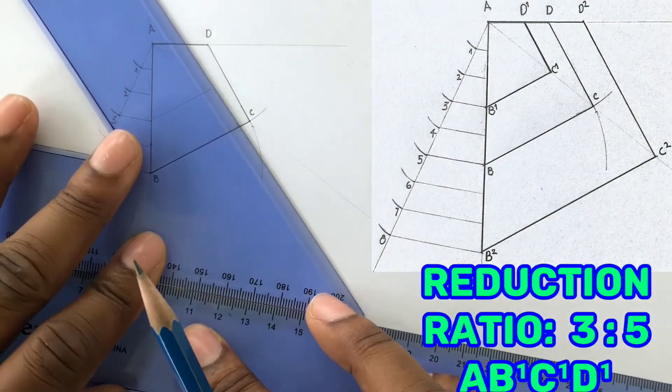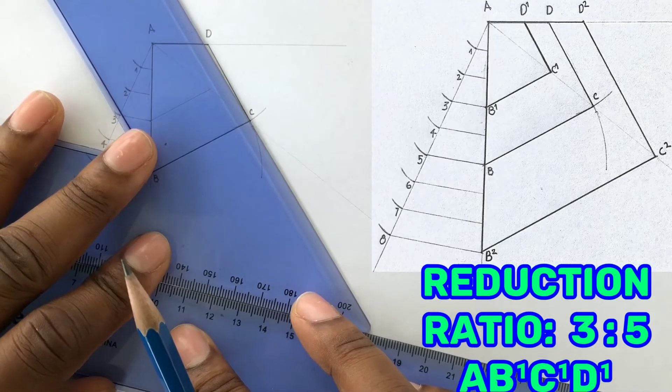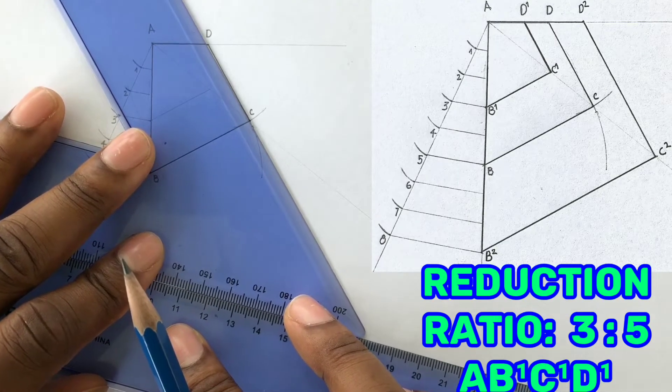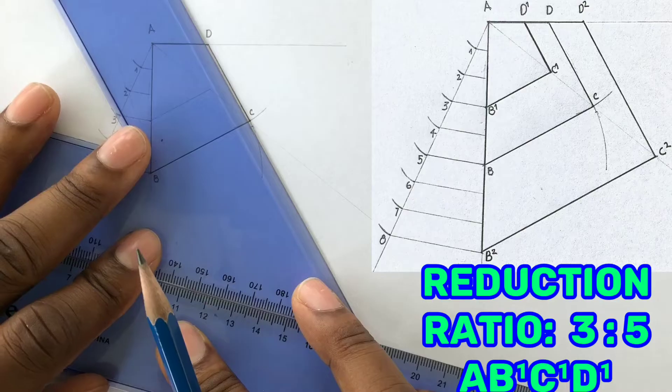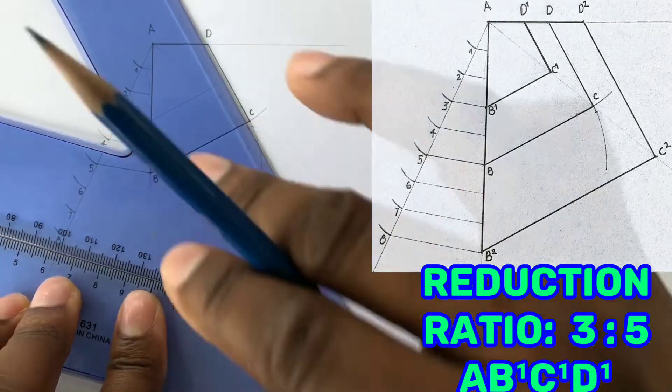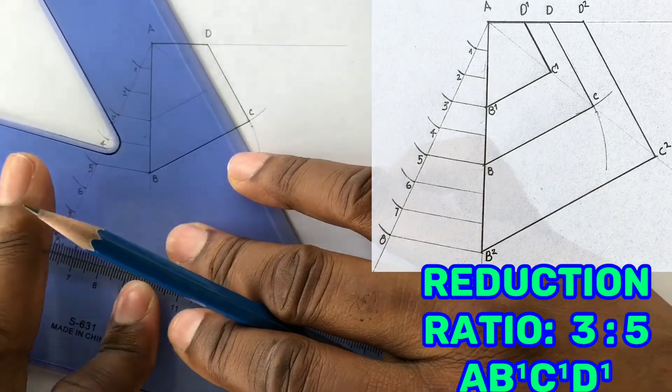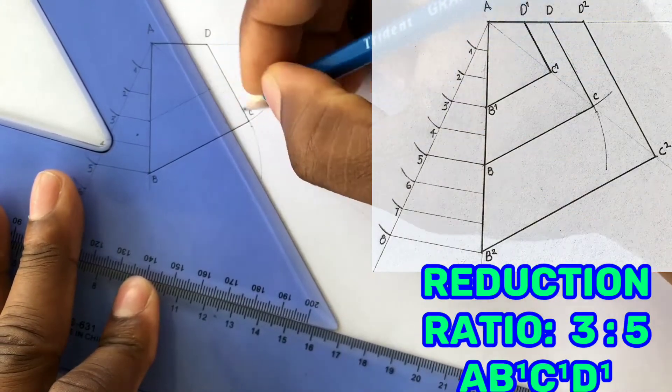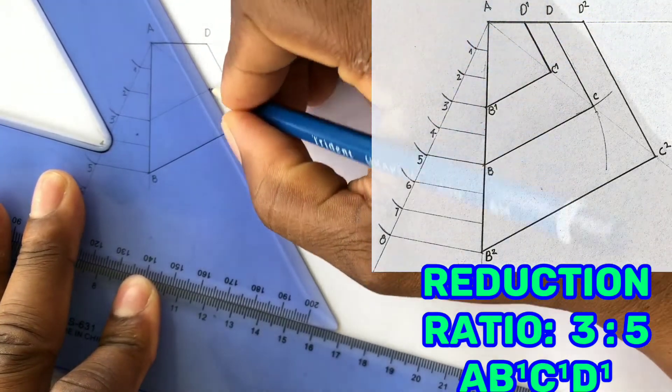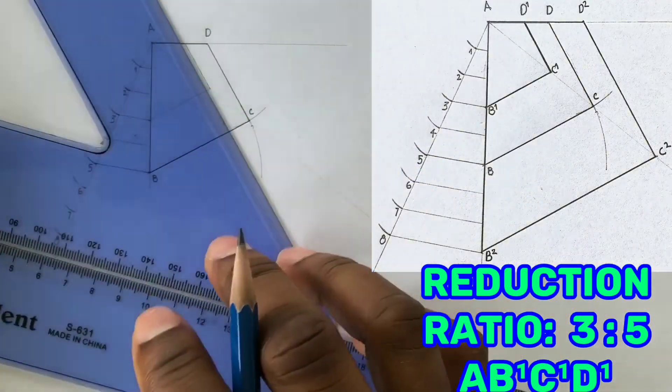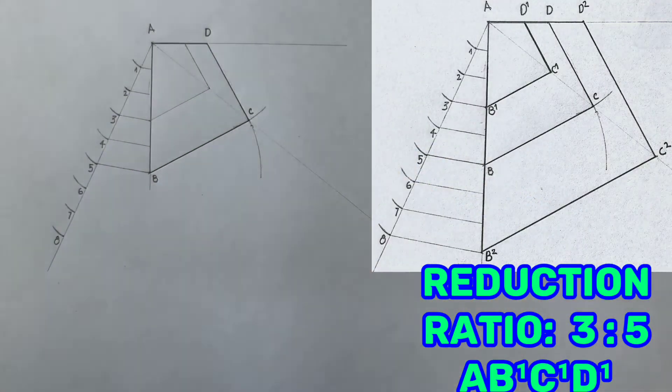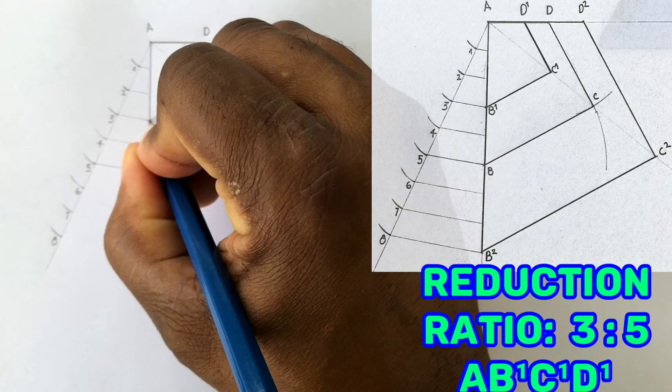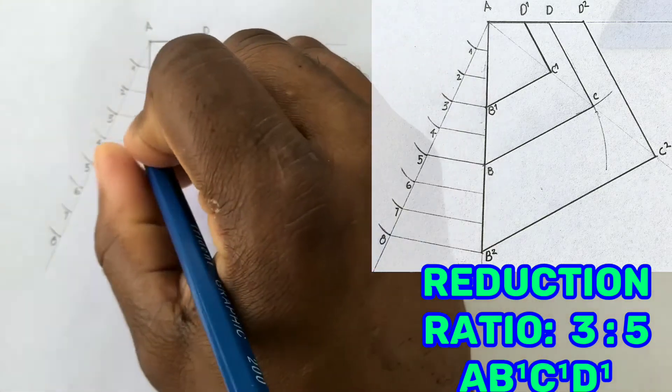Place a set square along line CD with another set square along this first set square. Slide the set square that is at the top until it reaches the intersection. Draw the line to AD. Label points B1, D1, and C1.